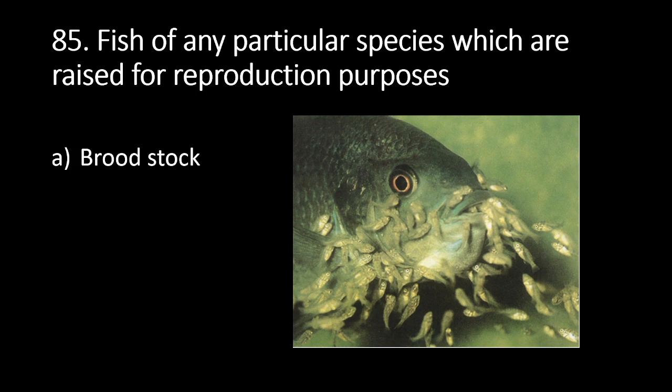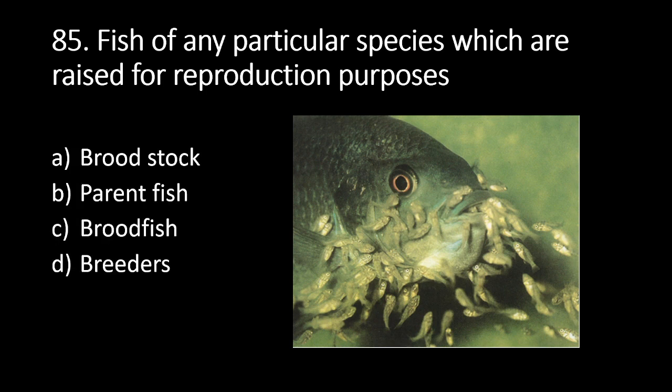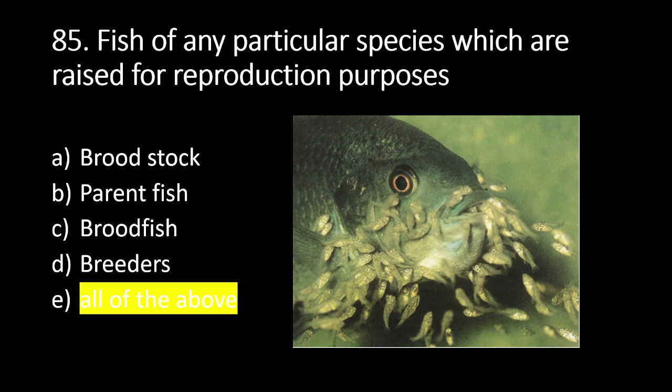Number 85: fish of any particular species which are raised for reproduction purposes. A. Broodstock, B. Parent fish, C. Brood fish, D. Breeders, E. All of the above. The answer is E. All of the above. Fish of any particular species raised for reproduction purposes can be called broodstock, parent fish, brood fish, or breeders.